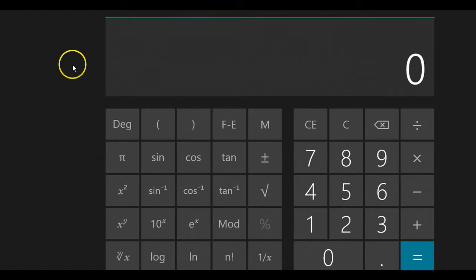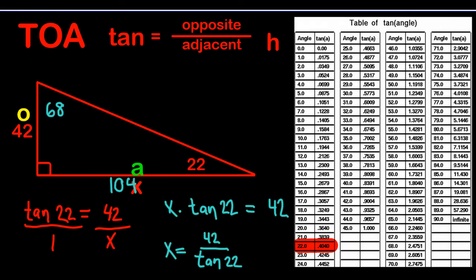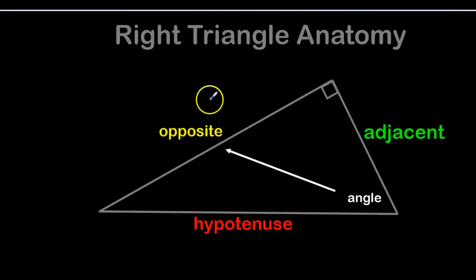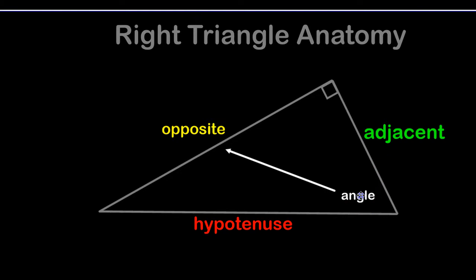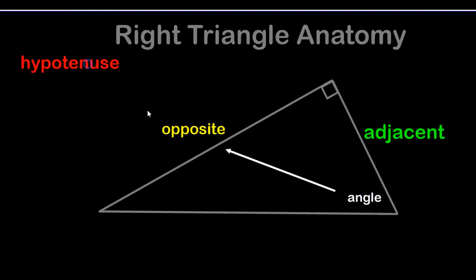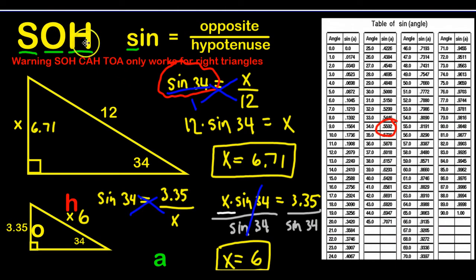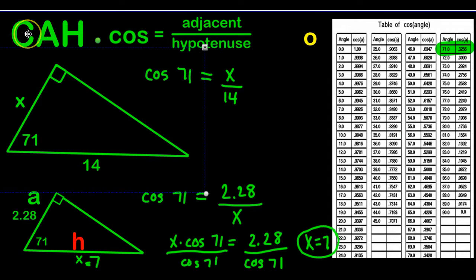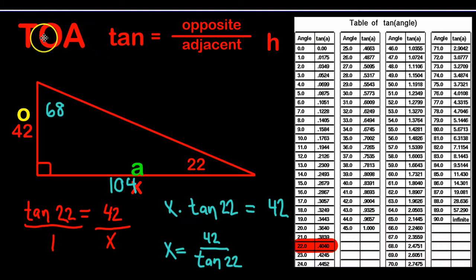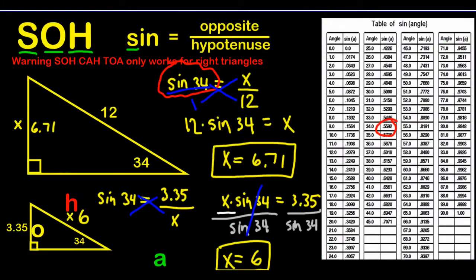That's pretty much SOHCAHTOA. You need to practice it to become proficient. Remember: whatever two sides you're using dictates which function to use. If you have opposite and hypotenuse, use sine. If you have adjacent and hypotenuse, use cosine. If you have opposite and adjacent, use tangent.